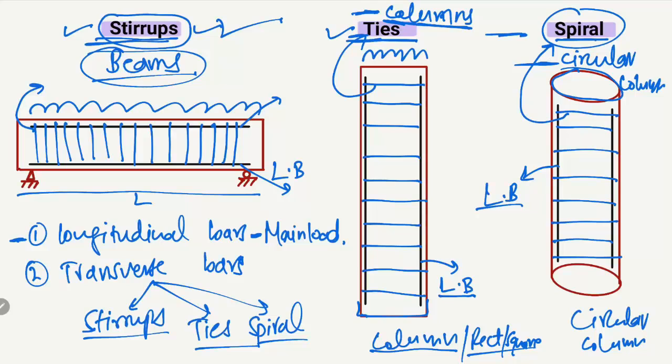All three types — stirrups, ties, and spirals — have the same purpose: they confine the concrete, increase the shear capacity of structural members such as beams and columns, and provide resistance to lateral loads like earthquake and wind loads. They just have different names depending on where they are used. Hope you guys understand the main difference between these three technical terms. Don't forget to subscribe to our channel for daily engineering videos.